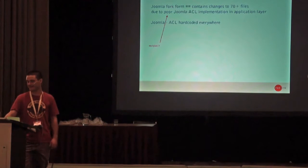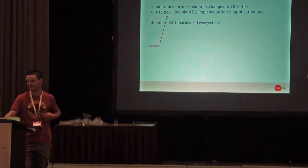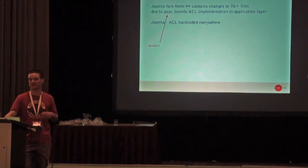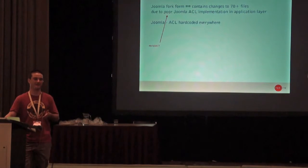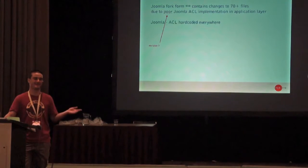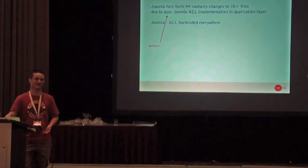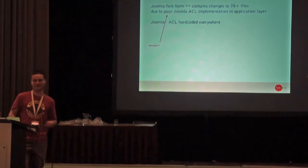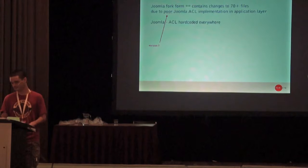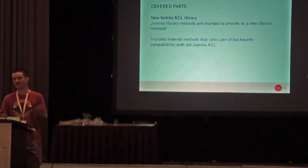It contains 70-plus files due to poor Joomla ACL implementation in the application layer, because Joomla's ACL is hard-coded everywhere — not just in the controllers, but even in the views, in the library — you have low-level ACL calls everywhere. So you cannot replace that ACL with something else; you need to cut out the code and replace it. There are no higher-level abstracted ACL calls that could be plugged in.